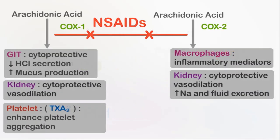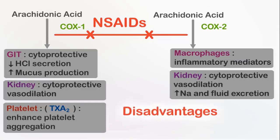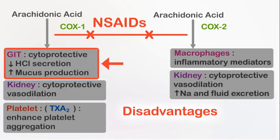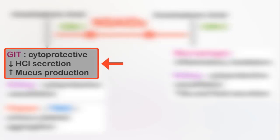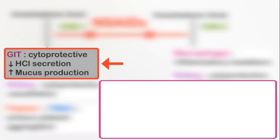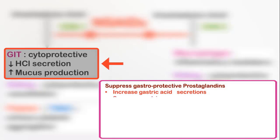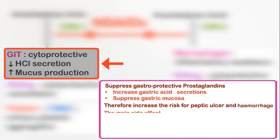Now let's switch to the disadvantages of non-selective NSAIDs, starting with the most worrying side effect, which is gastrointestinal complications. As you will remember, prostaglandins produced via the COX-1 pathway have cytoprotective effects as they suppress gastric acid production and stimulate the production of protective gastric mucus. Therefore, interference with the COX-1 enzyme will suppress the production of these prostaglandins and, as a result, gastric acid secretion will be increased and gastric mucus production will be suppressed. These unwanted changes will largely increase the risk of peptic ulcer and hemorrhage, which leads to internal bleeding and are the major drawbacks of this drug group.